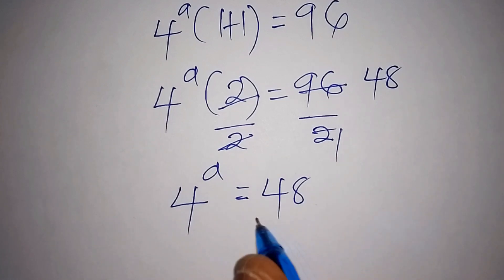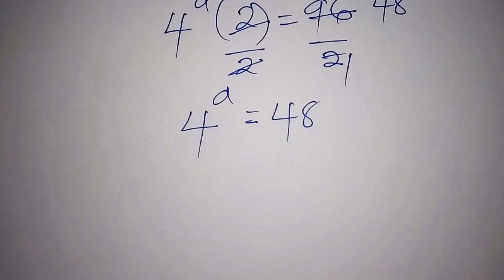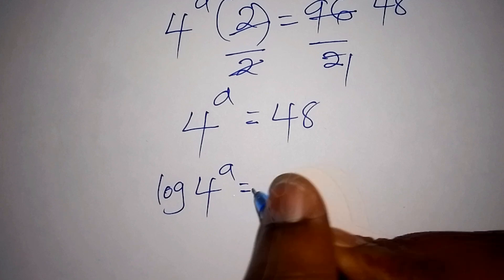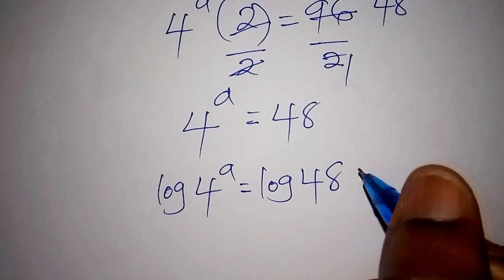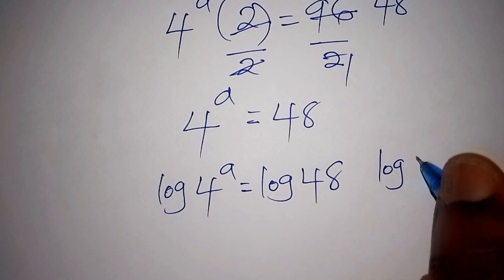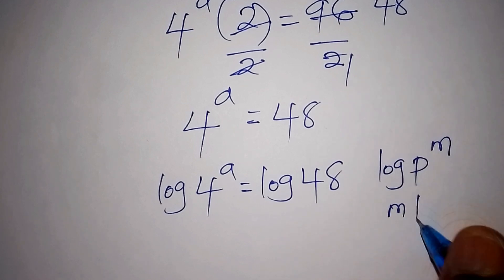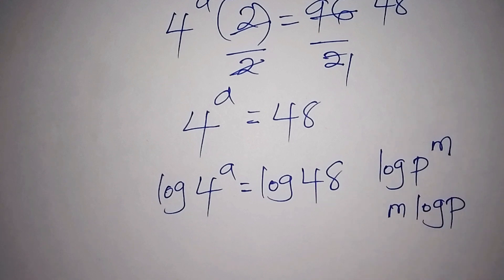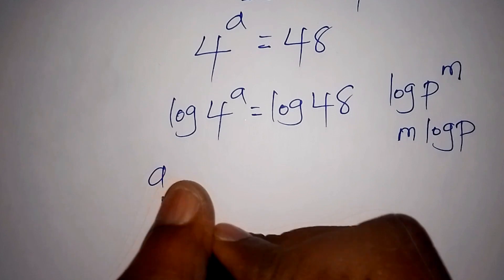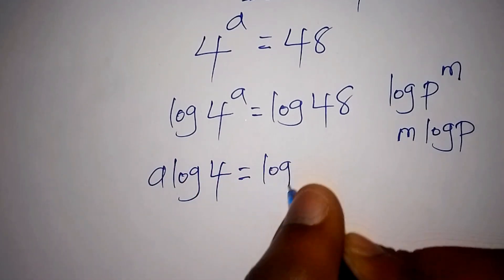The best thing we need to do is introduce the log on both sides. So we shall have the log of 4 to the power of a equals the log of 48. We know that log of p to the power of m can also be written as m times the log of p, so the log of 4 to the power of a becomes a times log of 4, equals log of 48.